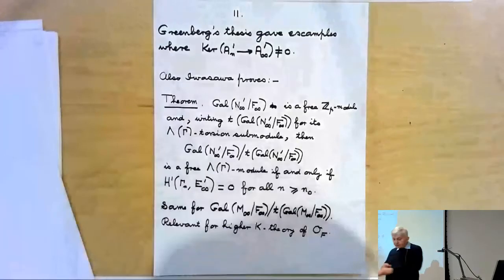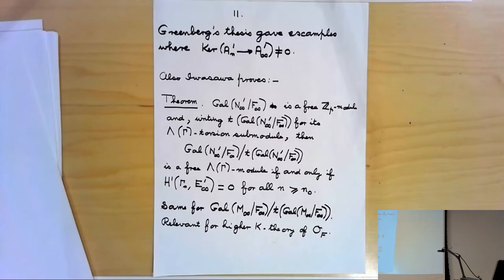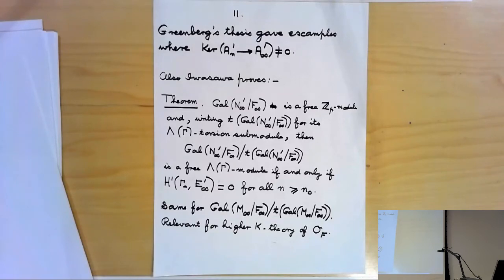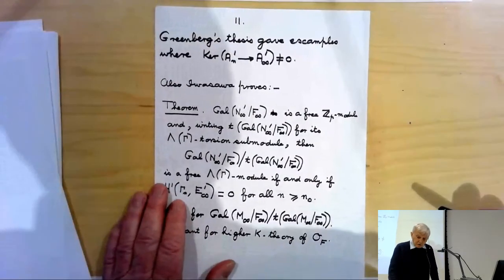That proves Theorem B. In my last lecture tomorrow I'm going to give Iwasawa's proof of Theorem A, which has nothing to do with the cyclotomic Zp-extension — it works in complete generality. For other Zp-extensions, if you don't have p-power roots of unity like E∞' there, that's why we don't know how to prove the weak Leopoldt conjecture for those other Zp-extensions, even though it must be true.